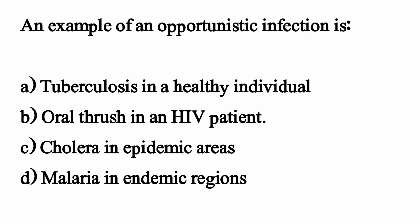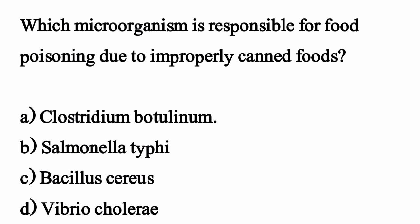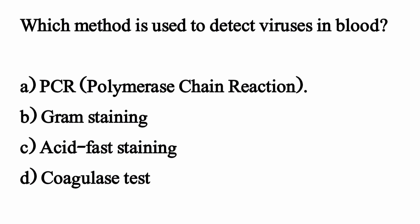An example of an opportunistic infection is — the correct option is option B: oral thrush in an HIV patient. Which microorganism is responsible for food poisoning due to improperly canned foods? The correct option is option A: Clostridium botulinum. Which method is used to detect viruses in blood? The correct option is option A: PCR, polymerase chain reaction.